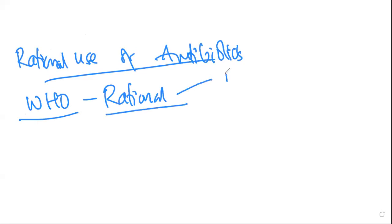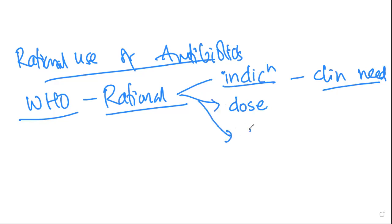Rational use of antibiotics. That's first of all indication. Rational use requires that the patient receive medication appropriate to their clinical needs. Appropriate to the clinical need medication. That is appropriate indication. Next, appropriate dose in doses that meet their own individual requirement. So appropriate indication for an appropriate dose for an appropriate duration for an adequate period of time. So adequate duration or adequate period of time.